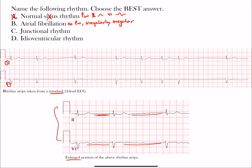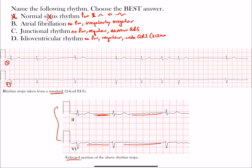In junctional rhythm, there are no required P waves, the rhythm is regular, and QRS complexes are narrow — less than 120 milliseconds. In idioventricular rhythm, there are also no P waves, the rhythm is regular, but QRS complexes are wide — greater than or equal to 120 milliseconds.